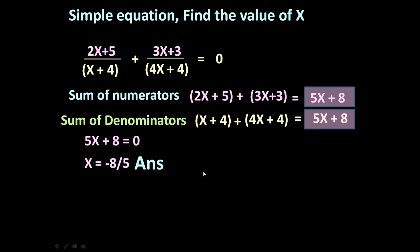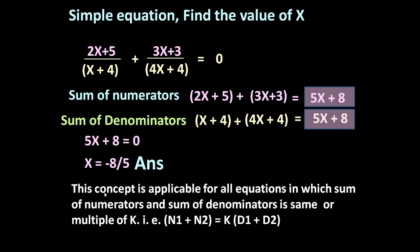This is a very simple method to solve such complicated equation problems. This concept is applicable for all equations in which the sum of numerators and sum of denominators are the same or a multiple of k: n1 + n2 = k·(d1 + d2). Here k = 1, but k may be anything. In that case, simply set either the sum of numerators or sum of denominators equal to 0 — both ways you get the same answer.